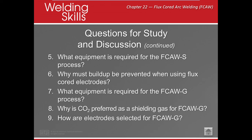How do we select an electrode for FCAW-G? Electrodes are selected by determining the type of process and highest current required. We also look at deposition rates, and then rules one and two: thickness of material and making the weld as strong or stronger than the base material.